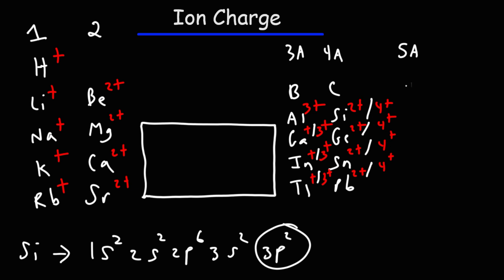Group 5A elements like nitrogen, phosphorus, and arsenic are non-metals. Arsenic may be considered a metalloid, but nitrogen and phosphorus are non-metals. Remember, metals give up electrons to form positively charged ions called cations. Non-metals, on this side of the periodic table, acquire electrons to form negatively charged ions called anions. Nitrogen has five valence electrons and wants to gain three electrons to satisfy its octet. Once it gains those three electrons, it will have a 3− charge. So group 5A elements typically form a 3− charge.